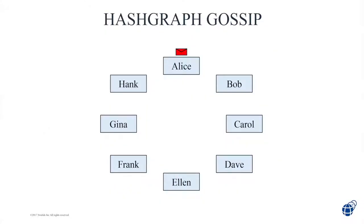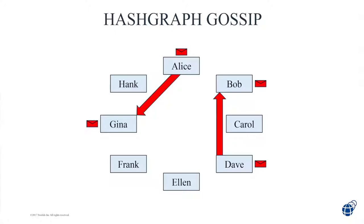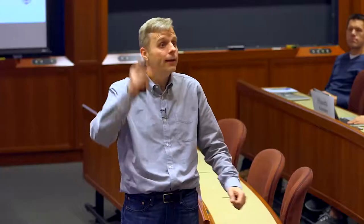What if Dave is targeted and his envelope doesn't come in? If Dave is attacked — if in the very first step Alice calls Dave and he's not talking — she just calls someone else at random. If Dave doesn't talk to her, she still talks to Gina. The message spreads differently, but it still spreads.